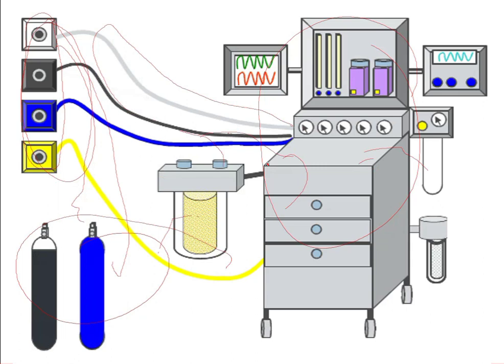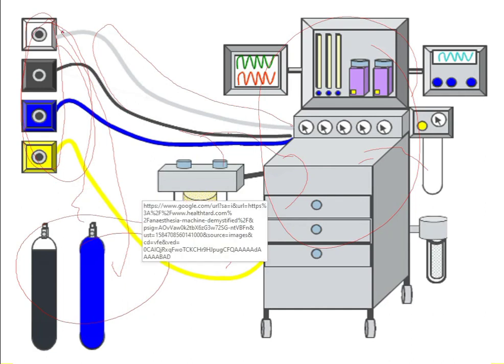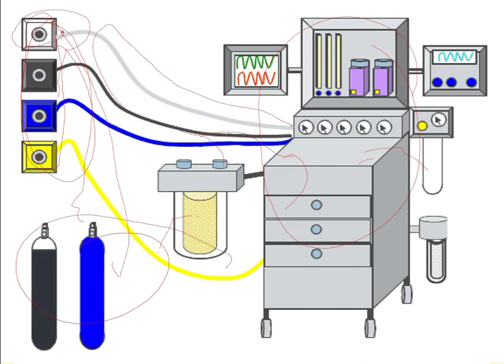We have many systems to protect the patient from a misconnection — supplying one gas instead of another. For example, there are safety systems to prevent supplying the patient with nitrous oxide instead of oxygen, because it is a disastrous and fatal mistake to supply a hypoxic mixture with a very high concentration of nitrous oxide instead of oxygen.